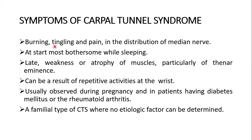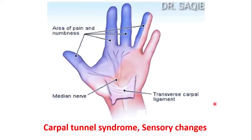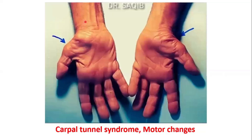Symptoms include tingling and pain in the distribution of the median nerve, most bothersome while sleeping. Late weakness or atrophy of the muscles, particularly of the thenar eminence, can result from repetitive activities at the wrist, and is usually observed during pregnancy and in patients with diabetes mellitus or rheumatoid arthritis. There is also a familial type where no etiological factor can be determined. Sensory changes affect the lateral three and a half fingers.